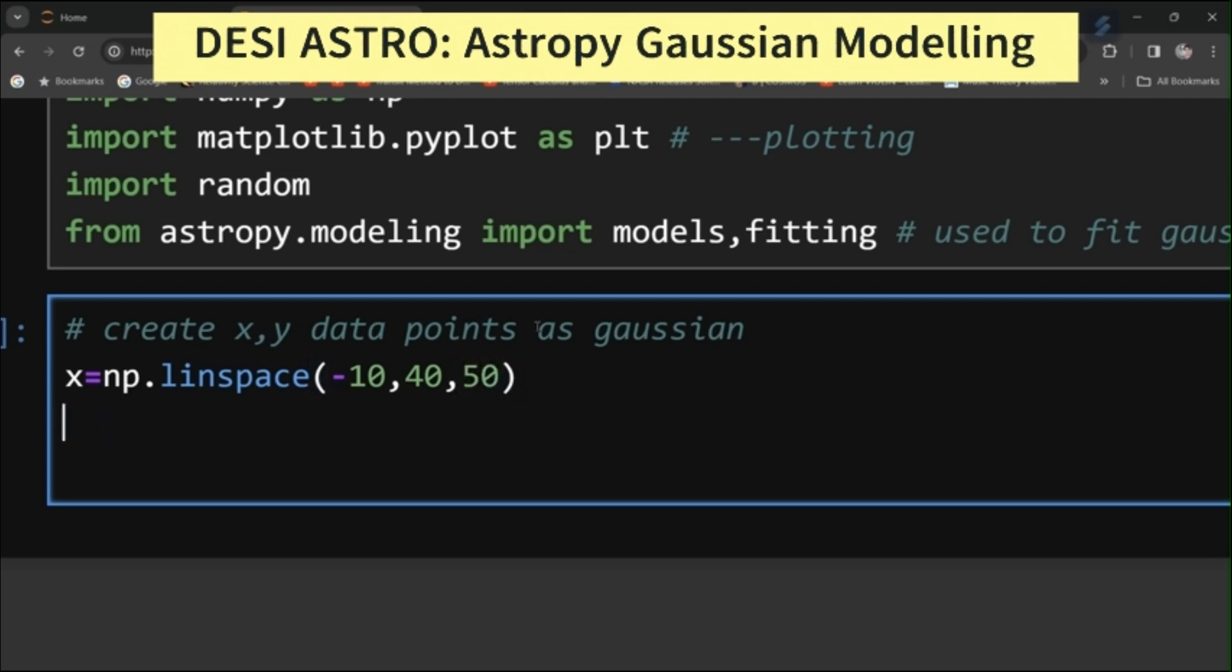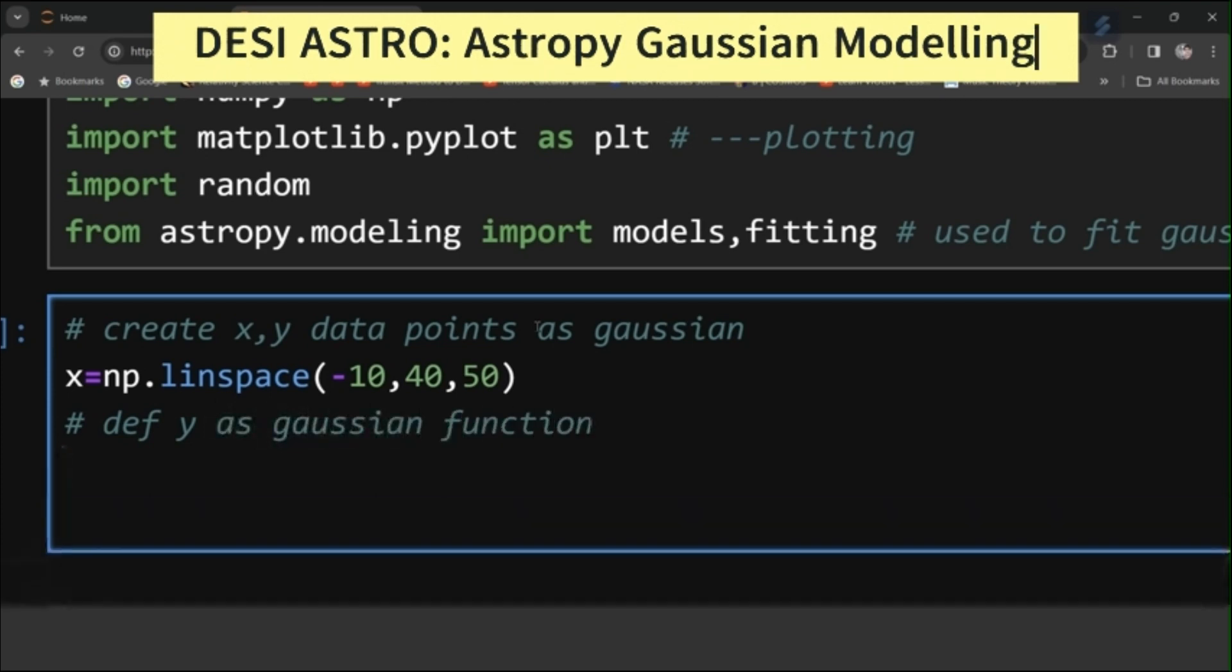Now I will define my y as Gaussian function. You can define y equal to give some amplitude, initial amplitude say 100 into np.exponential minus and then you can say x minus 5, so 5 is the mean initial mean and you can give sigma x equal to 100.